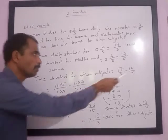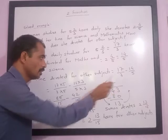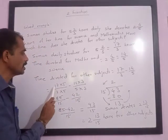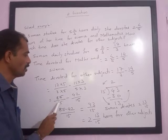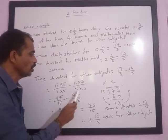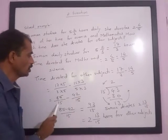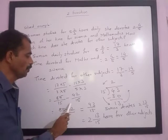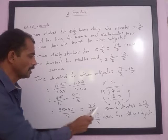So the answer is: 17 times 5 is 85, 3 times 5 is 15, 14 times 3 is 42, and 5 times 3 is 15. So denominators are same, we can do the subtraction. 85 minus 42: 5 minus 2 is 3, and 8 minus 4 is 4, so we will get 43/15.